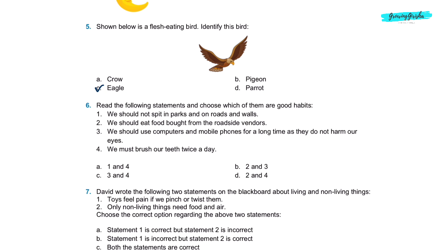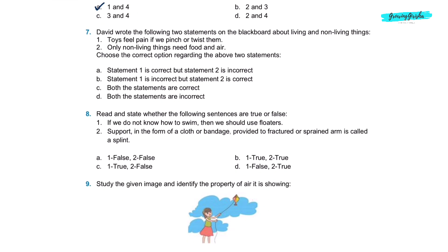Question 6. Read the following statements and choose which of them are good habits. One, we should not spit in parks and on roads and walls. Two, we should eat food bought from the roadside windows. Three, we should use computers and mobile phones for a long time as they do not harm our eyes. Four, we must brush our teeth twice a day. One and four are good habits. So option A, one and four is the correct answer.